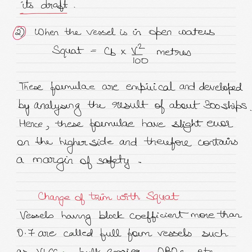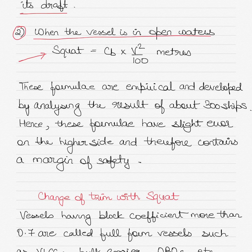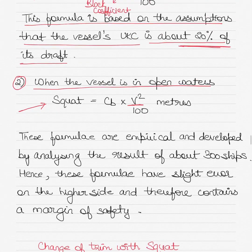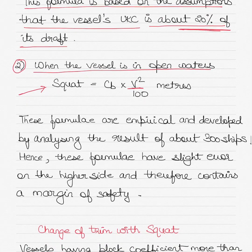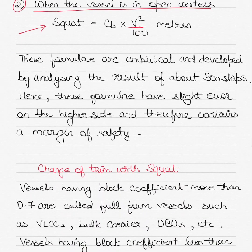The second formula applies when the vessel is in open waters, not in confined conditions of narrow channels or traffic separation schemes. In this case, the squat is equal to the block coefficient multiplied by the square of the ship's speed divided by 100. The only difference from the previous formula is that the factor of two is removed.